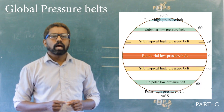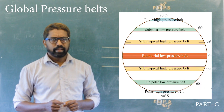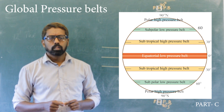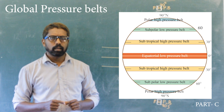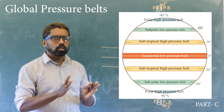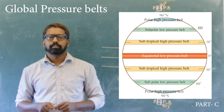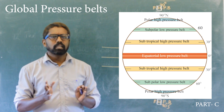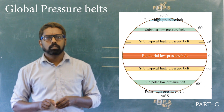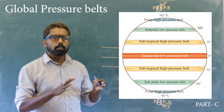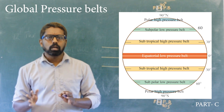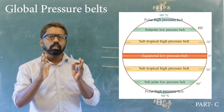90 degree polar high-pressure belt. This zone experiences severe cold throughout the year. As a result, the air remains chilled under the extreme cold that prevails over the poles, and this contributes to the steady high pressure experienced here.